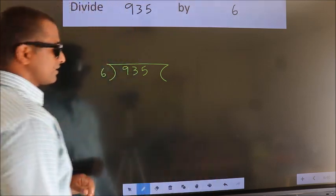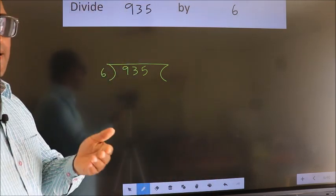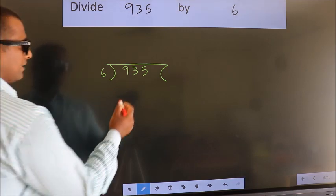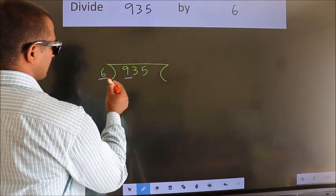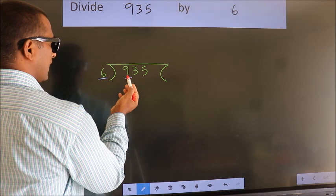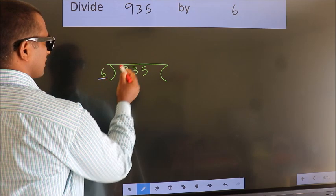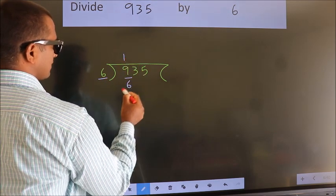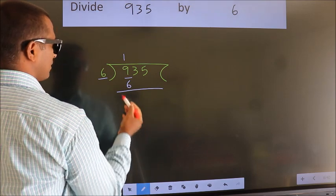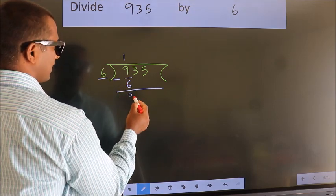This is your step 1. Next, here we have 9, here 6. A number close to 9 in 6 table is 6 times 1 is 6. Now we should subtract. We get 3.